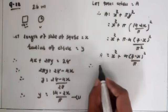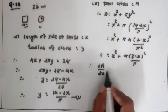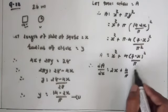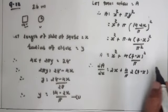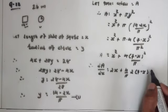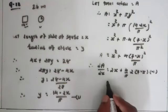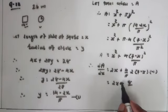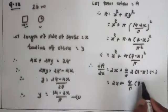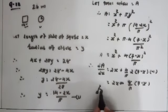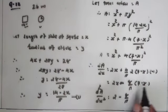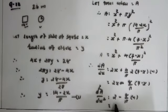Now the first derivative: dA/dx = 2x + (4/π) · 2(7 − x) · (−1) = 2x − 8(7 − x)/π. The second derivative d²A/dx² = 2 + 8/π, which is greater than 0.